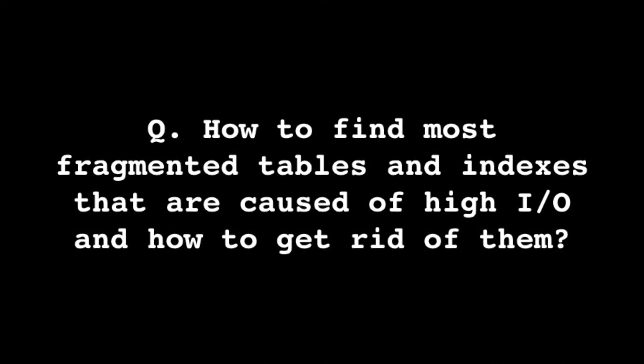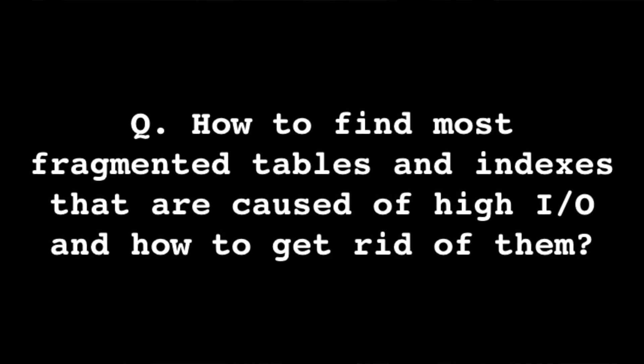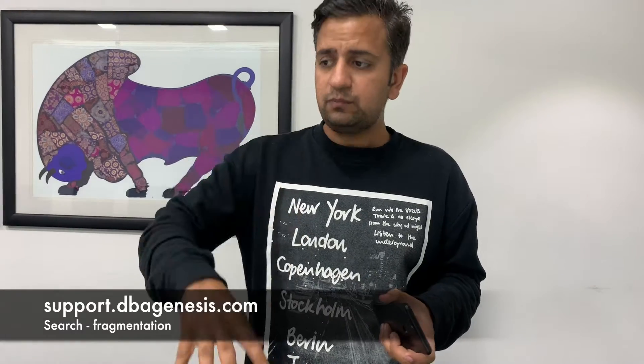The second question: How do you find the most fragmented tables and indexes causing high I/O, and how do you fix them? I won't answer this directly because we have a detailed article on our support website. Go to support.dbagenesis.com and search for 'fragmentation' or 'table fragmentation'. The article shows actual space used versus wasted space with exact percentages, helping you decide whether to perform defragmentation.